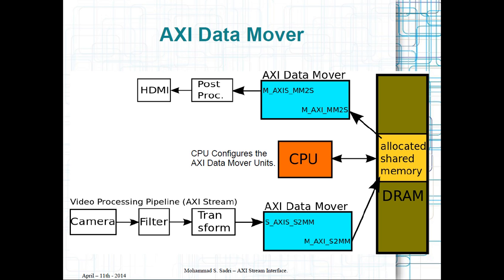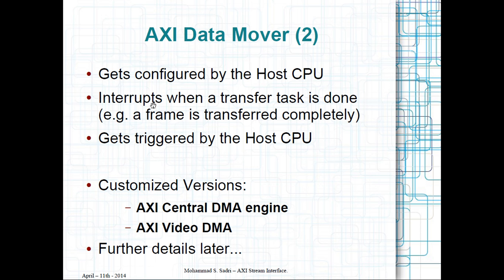We will talk about this in more detail in later videos. The AXI Data Mover needs to be configured and produces a set of interrupts that should be handled by the CPU. There also exist customized versions of the AXI Data Mover — two very famous ones are the AXI Central DMA engine and the AXI Video DMA. In the Vivado IP library we can see the AXI Data Mover, AXI Central DMA, and AXI Video DMA; principally they are the same component.